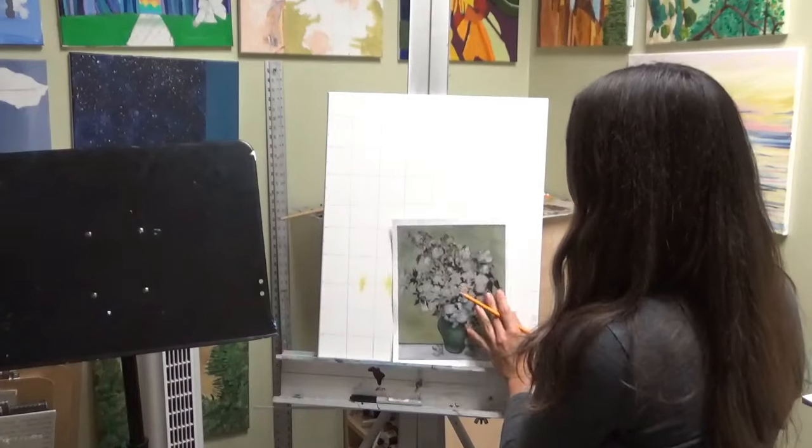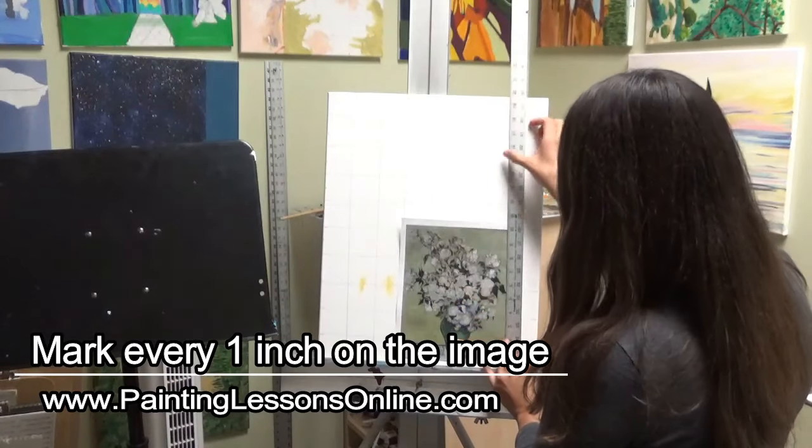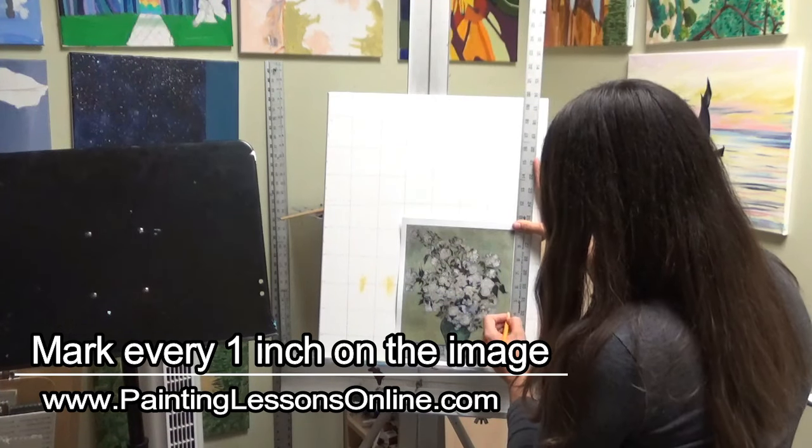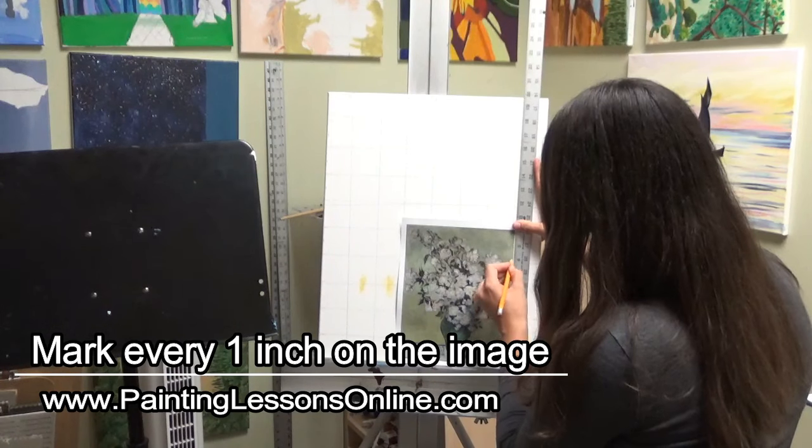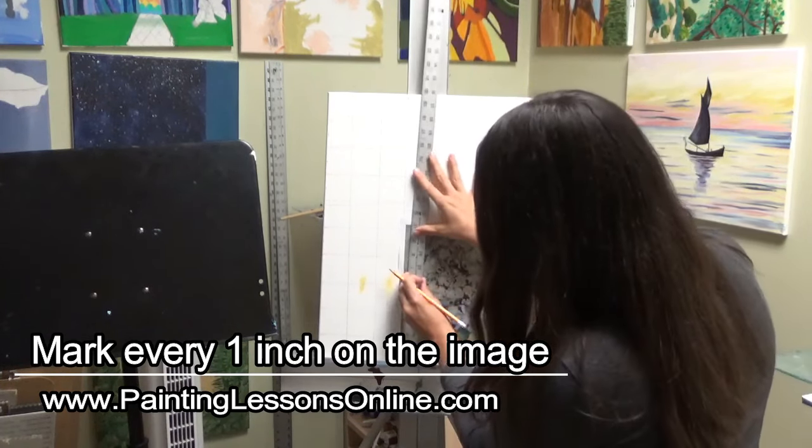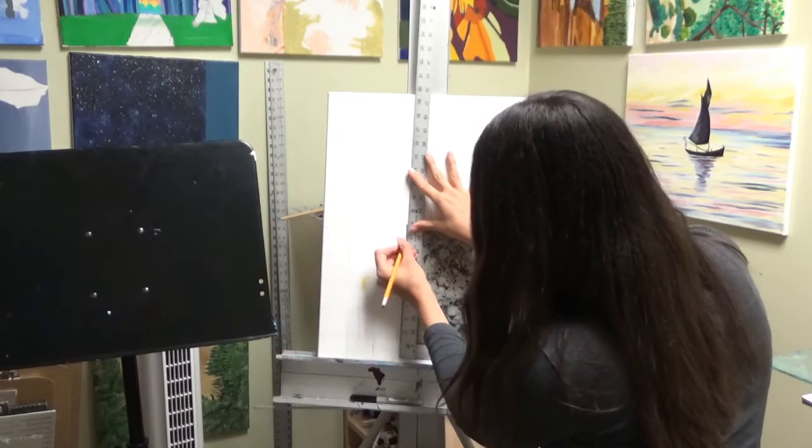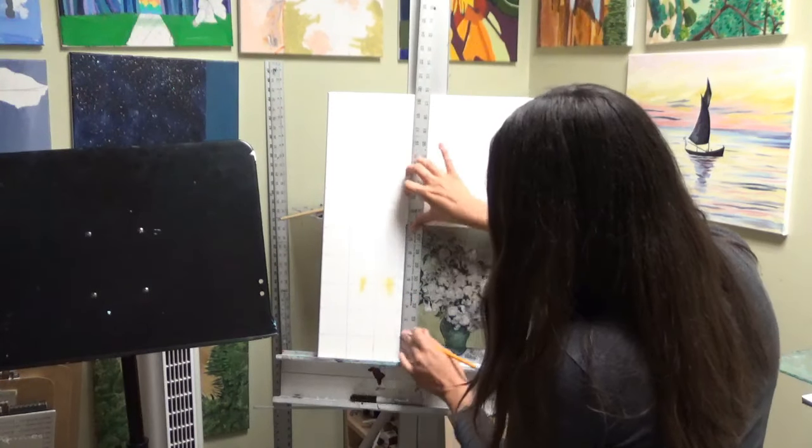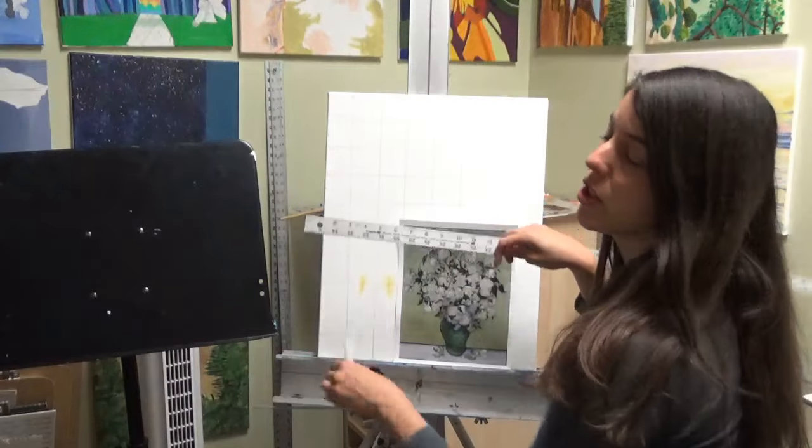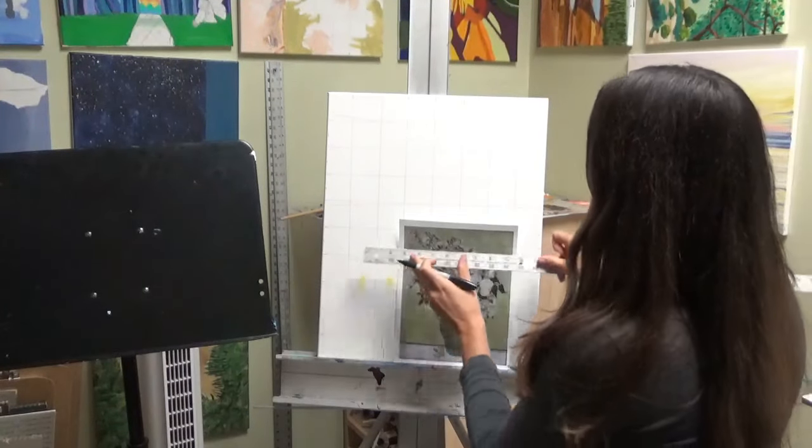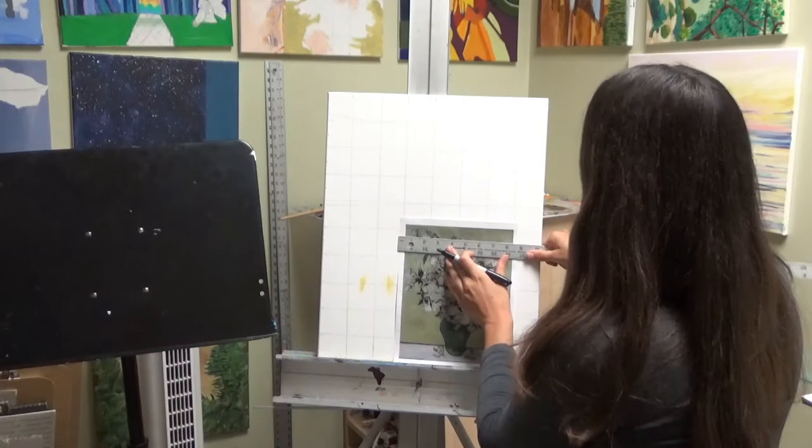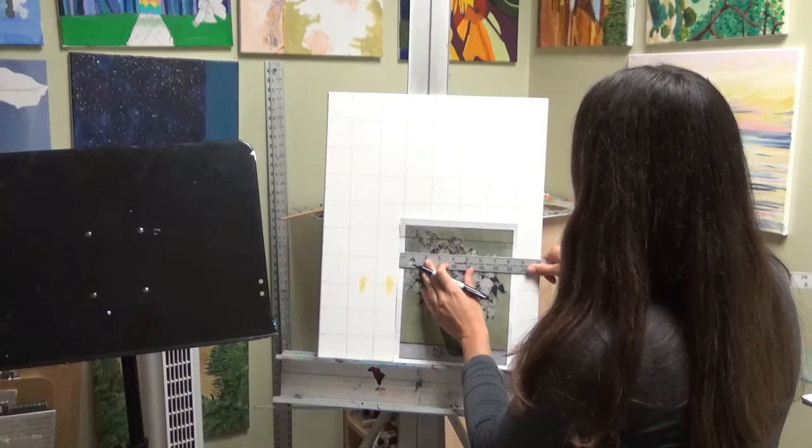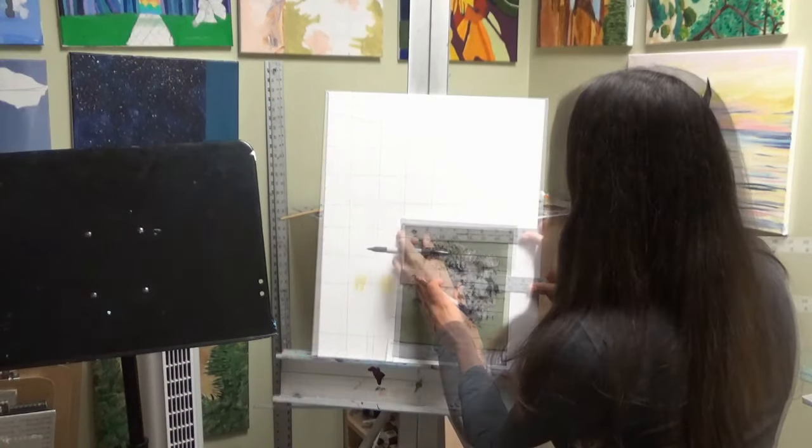Now do the same for the image. Divide it into 1 inch squares. I'm going to use a sharpie just so that you can see the lines better there at home, but feel free to use a pencil when you divide your image.